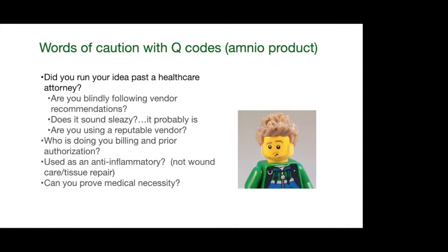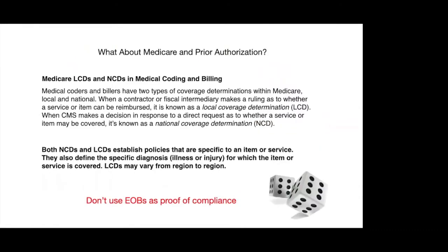The insurance company will tell you in advance whether they'll pay for it or not — if not, that becomes a cash patient. There is a system in place for private insurance that will tell you whether you're going to get paid on a specific service. This gets rid of a lot of clawback issues where a doctor inappropriately uses codes for patients, and the insurance company comes back a couple of years down the road asking for all that money back. With prior authorization, you actually get the green light from the insurance company.